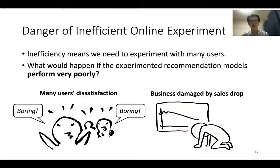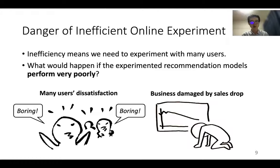Inefficient online experiment is dangerous. Inefficiency means we need to experiment with many users. What would happen if the experimented recommendation models perform very poorly? Possibly, many users blame your service and your business could be damaged by a sales drop. We want to avoid these situations.